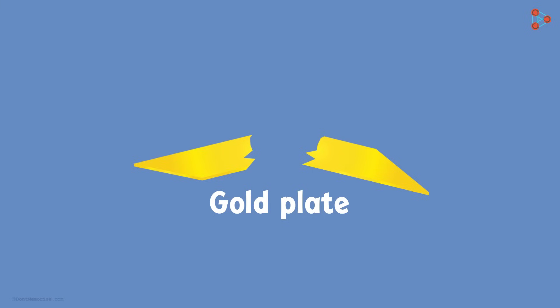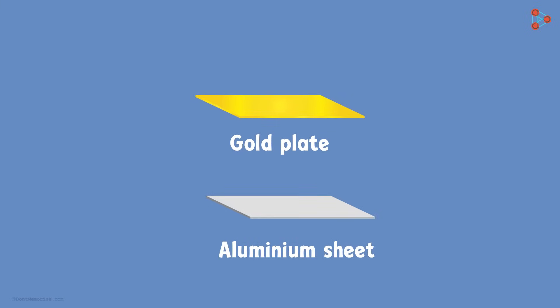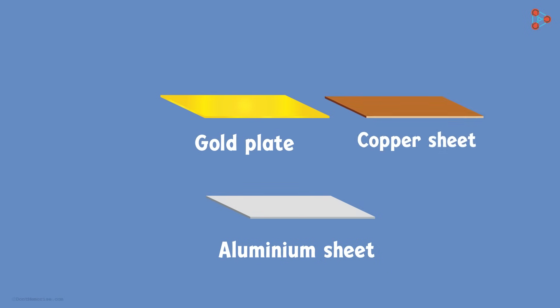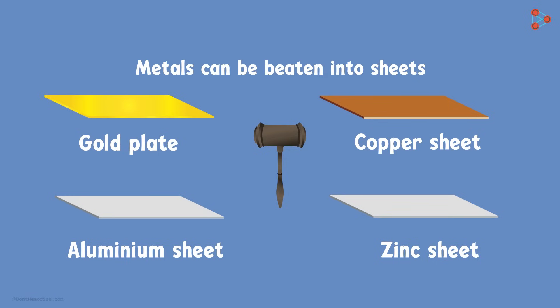Did I say plate of gold? How do you think huge aluminium sheets are made — or sheets of copper or zinc? If I take a hammer and beat them, will they break or will they turn into sheets? It is the amazing property of metals to be beaten into sheets, and we call this property of metals malleability. Most metals can be beaten into thin sheets.